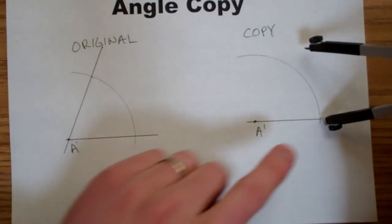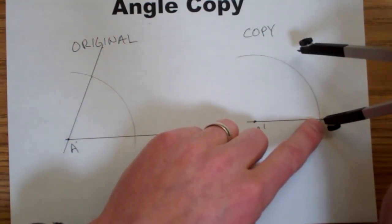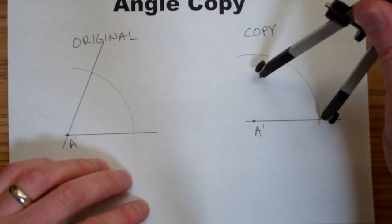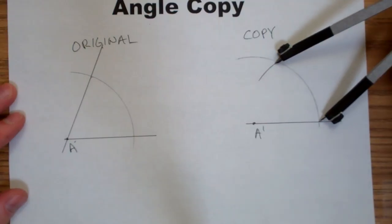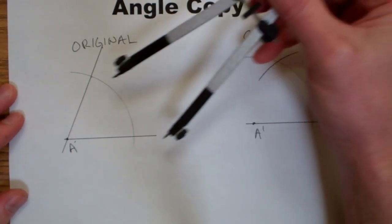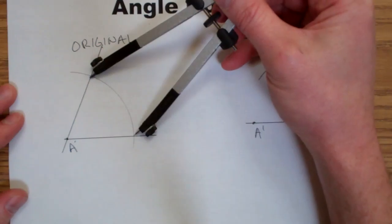To do that, I stab my point in the bottom intersection, and I make an intersecting arc through the first arc, so that this distance and this distance are the same.